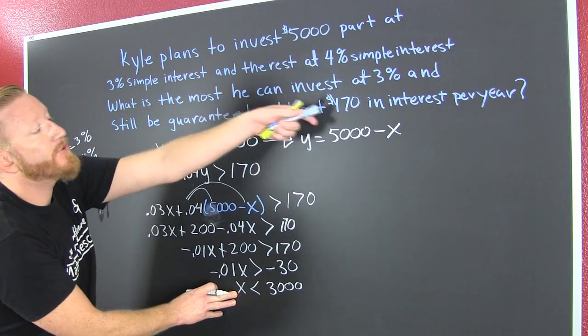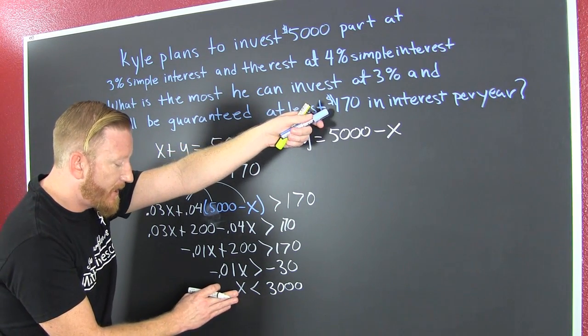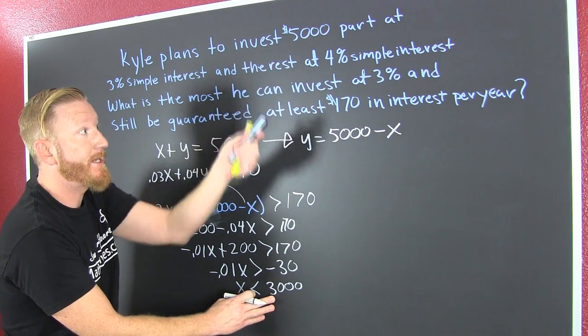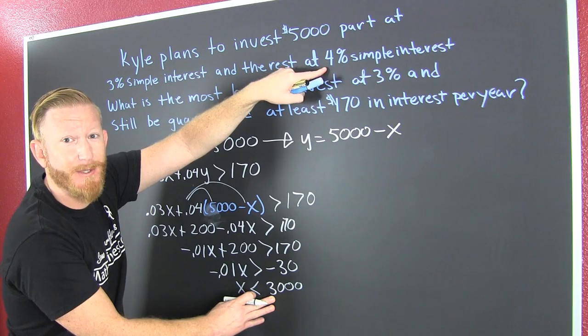Because he's trying to get a total return of $170. If he invests any less than $3,000 in the 3%, he's investing more in the 4%, meaning he's going to get a greater return.